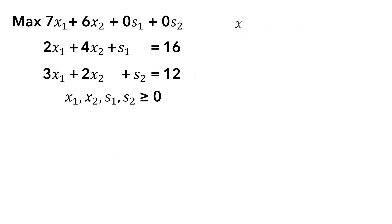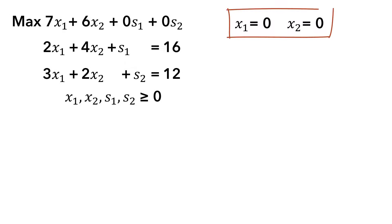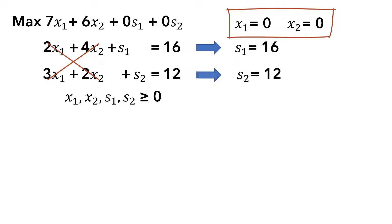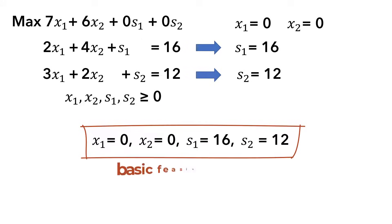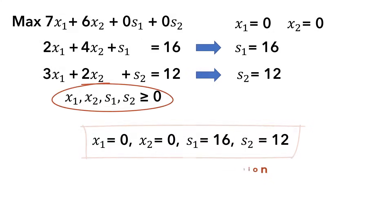Usually, we start by setting x1 and x2 to 0. In that case, s1 will be 16 and s2 will be 12. In essence, we've made x1 and x2 non-basic, so that s1 and s2 are the basic variables. This is called a basic feasible solution — feasible because it satisfies non-negativity as well.